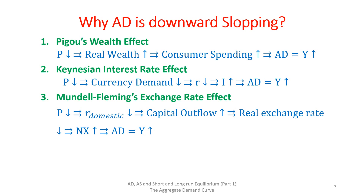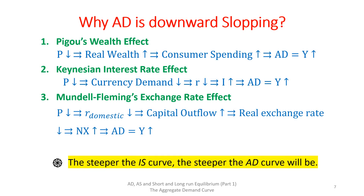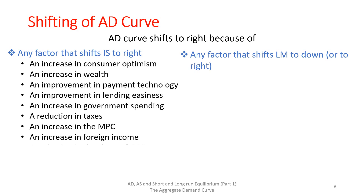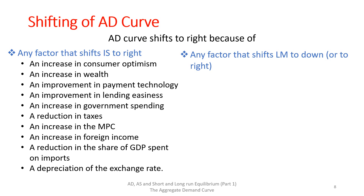It is also important to note that the magnitude of the aggregate demand curve slope depends on the slope of the IS curve. The steeper the IS curve, the steeper the aggregate demand curve will be. Now let's discuss the shifting factors. The aggregate demand curve shifts to the right because of any factor that shifts the IS curve to the right, or because of any factor that shifts the LM curve downward.